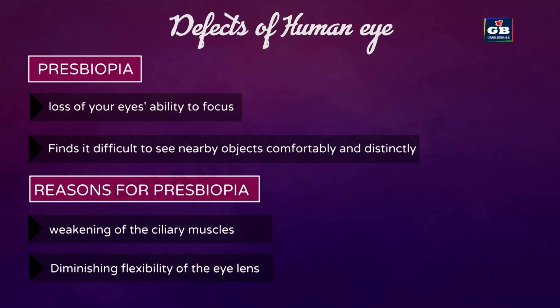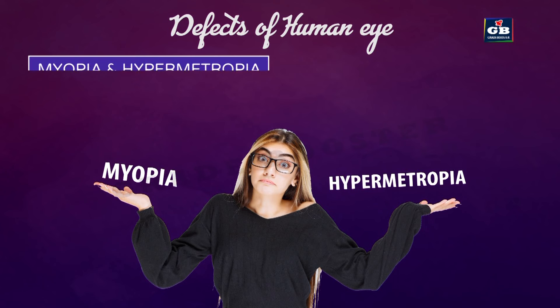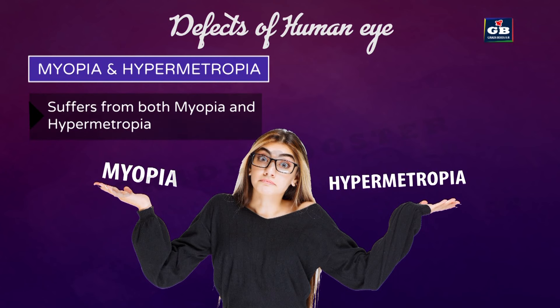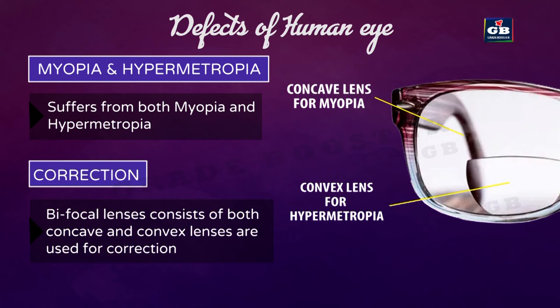The second reason for presbyopia is the diminishing flexibility of the eye lens. The eye lens is a transparent, flexible, jelly-like material, but with aging it loses flexibility and becomes rigid. Due to this rigidity, the eye lens cannot adjust properly. In some cases, people suffer from both myopia and hypermetropia, and bifocal lenses are needed — the upper portion is a concave lens for distant vision and the lower part is a convex lens for near vision.